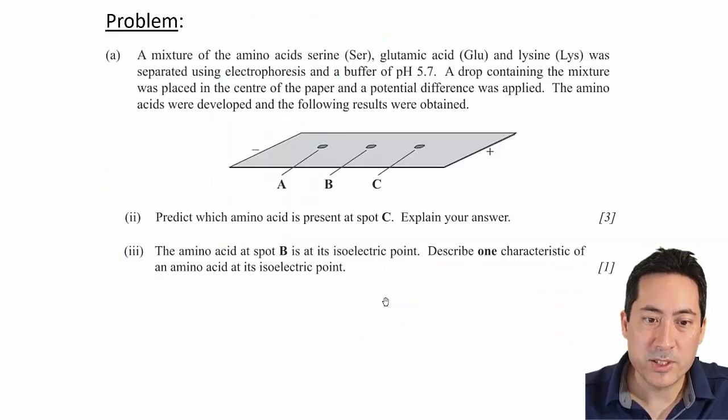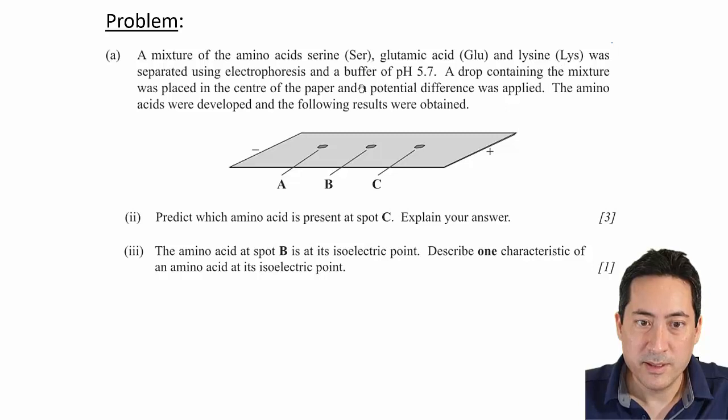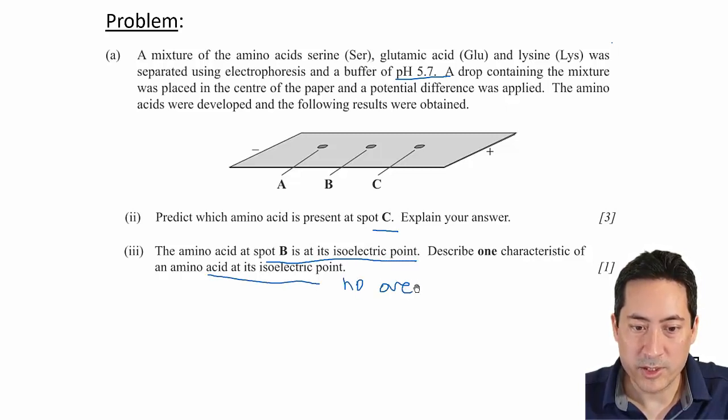If they have a negative charge, they'll be attracted to this positive. If they're positive, they'll go this way, the positive electrode. And if they're positive, they'll go this way and be attracted to this negative electrode. And so that's how you can separate them out. They can then be stained using ninhydrin or UV because that will show up the amino acids that came from the protein. And so a practice question here. There's a mixture of serine, glutamic acid and lysine. And the buffer, the pH is 5.6, 5.7. So what's the spot at C? How do you explain it? And the amino acid B is at the isoelectric point. So what does that mean? That means it has no overall charge. And so it doesn't move.